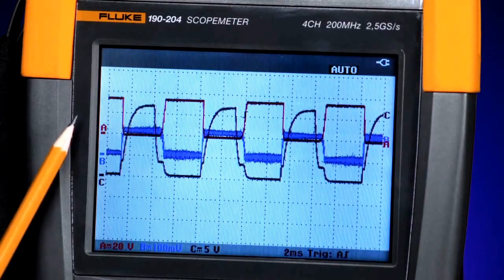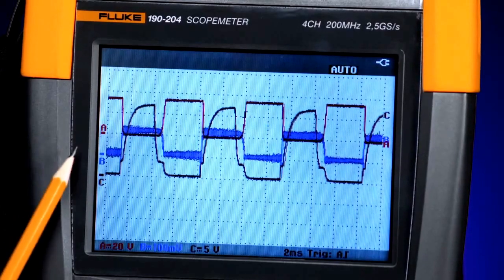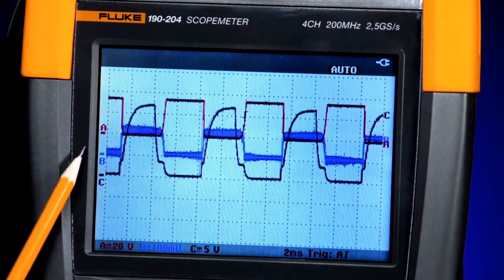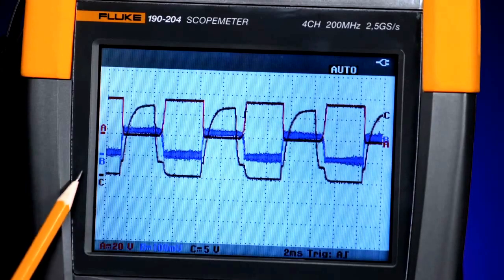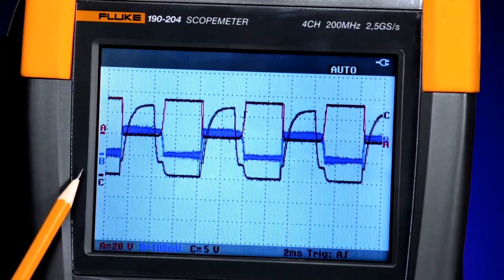Channel A is looking at the gate drive signal to the switch. Channel B is looking at the voltage output across the switch, and Channel C is looking at the current drawn through the switch.